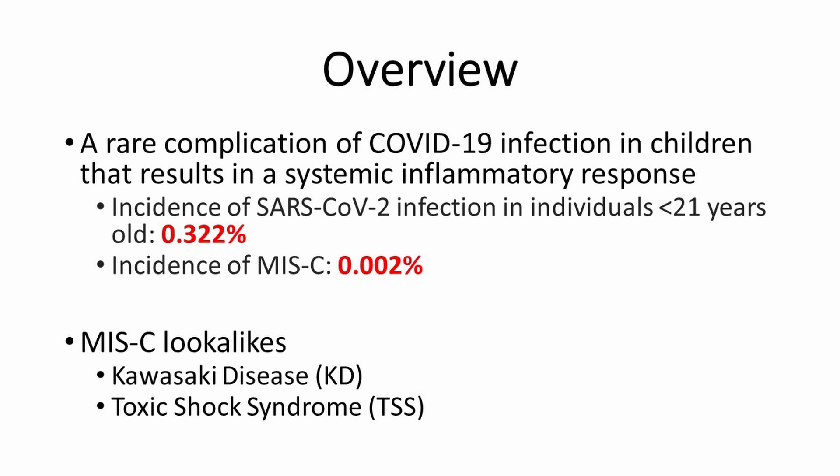Furthermore, MIS-C does look like other diseases such as Kawasaki disease, toxic shock syndrome, macrophage activation syndrome, and cytokine release syndrome. However, this is a distinct disease. For instance, Kawasaki disease is an acute necrotizing vasculitis of unknown etiology, and toxic shock syndrome is an inflammatory reaction caused by bacterial exotoxins — and this is not the same underlying pathophysiology as COVID-19 presenting as MIS-C in children.